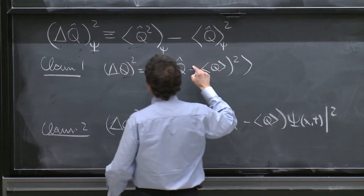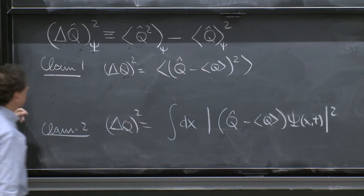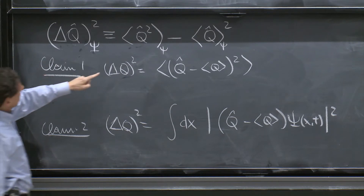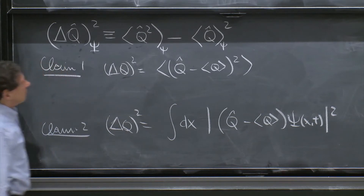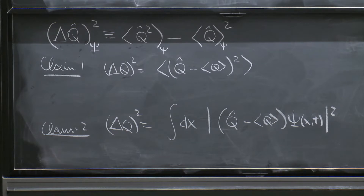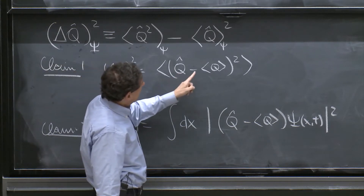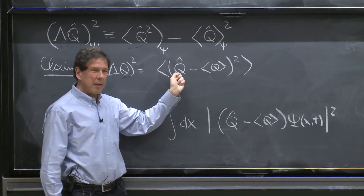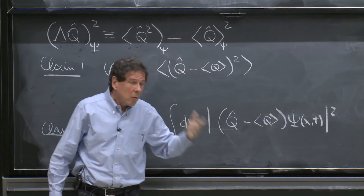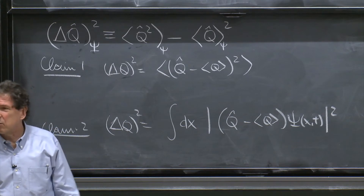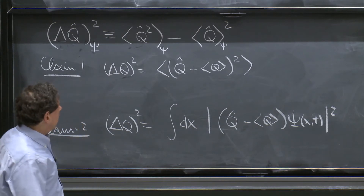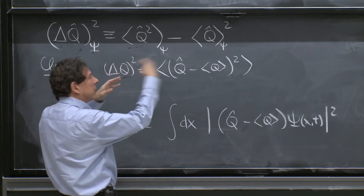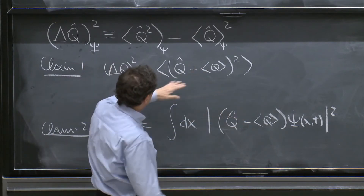This was always a positive quantity, because, as Claim 1 goes, it can be rewritten as the expectation value of the square of the difference between the operator and its expectation value. This may seem a little strange — you're subtracting from an operator a number. But we know that numbers can be thought of as operators as well. Operator minus a number acting on a state is well-defined: the operator acts on the state, the number multiplies the state.